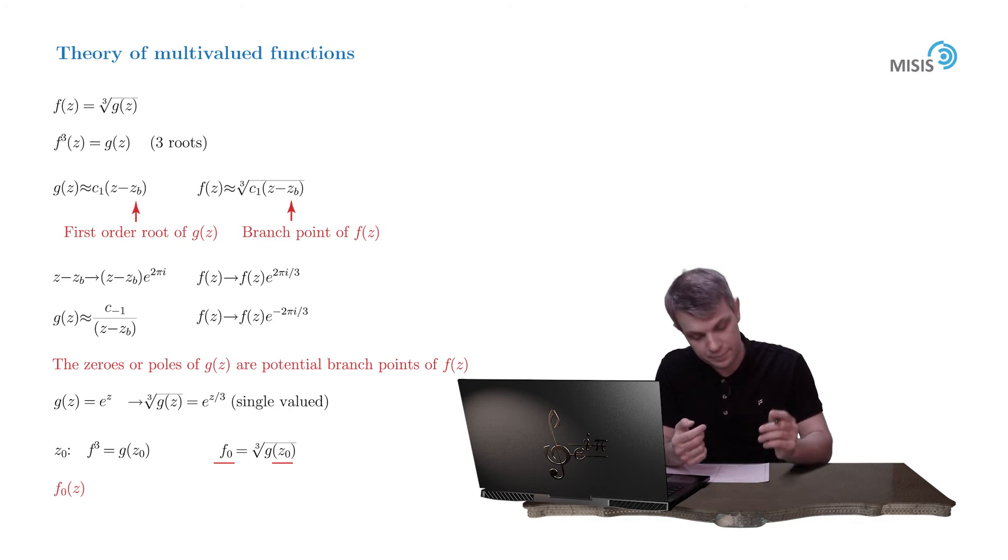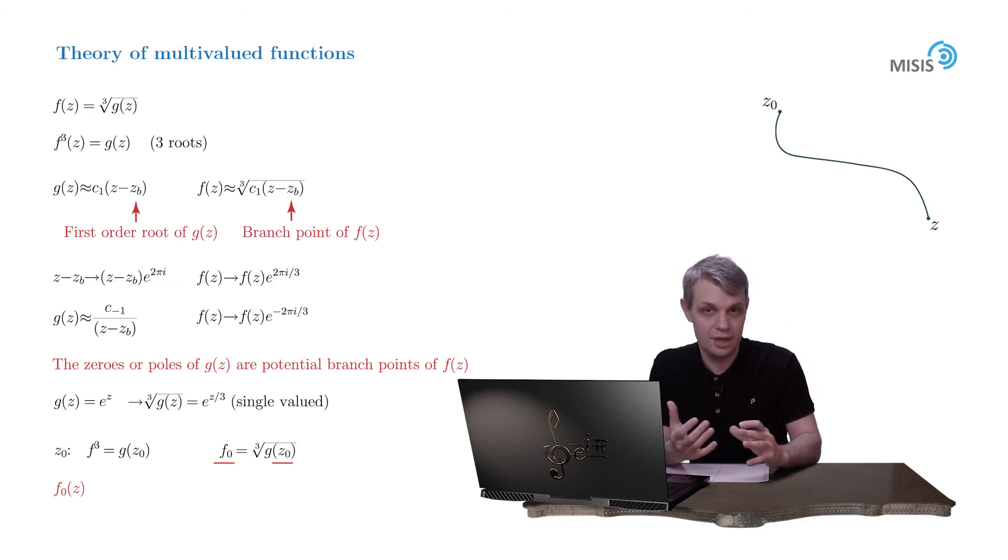So how do we build it? We do the following trick. Suppose we want to find the value of our function at some arbitrary point z. Then we connect the reference point and this point z with some contour, and the condition is that this contour shouldn't cross the branch cuts. That's important. And then we compute the change of the argument of our z number once we travel from z naught to z. Well, the argument of the complex number is a multi-valued function. It's defined modulo 2 pi. But the change of the argument is the uniquely defined function. It doesn't have this modulo 2 pi multi-valuedness.